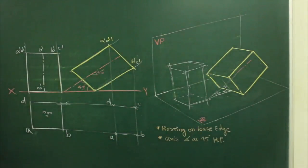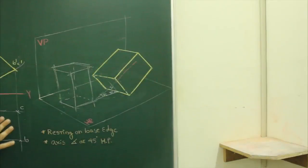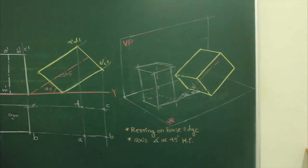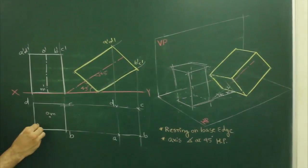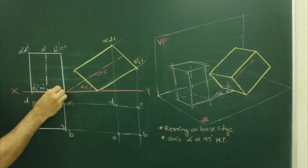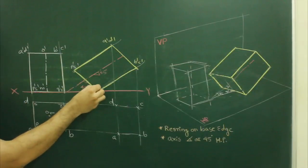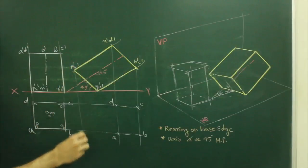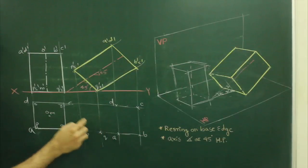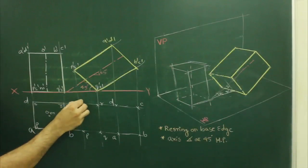Now if you see the main diagram, the square prism has two squares — one at the bottom and one at the top. We have completed the top part of the prism. Now for the bottom part, we label it p, q, r, s. So p dash, s dash, q dash, r dash — projecting p dash gives p, q dash gives q, r dash gives r, s dash gives s.